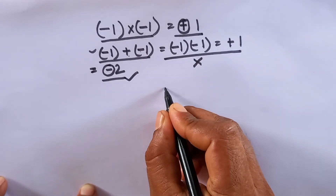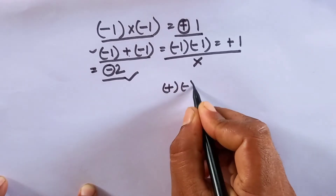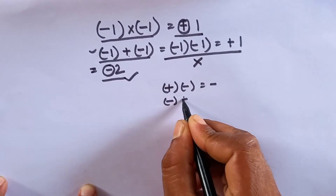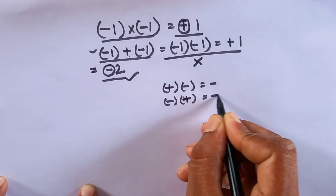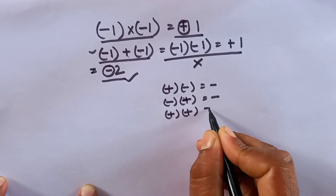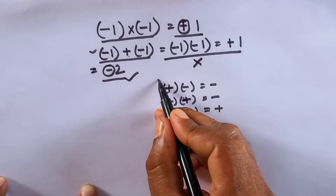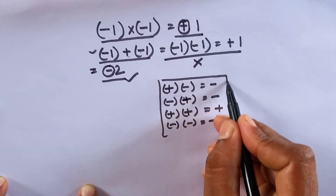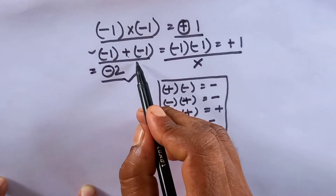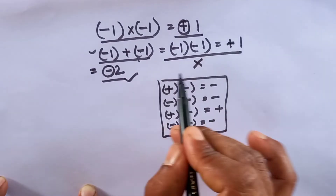You know the sign rules: plus and plus is plus, minus and minus is plus. Minus into plus is minus. Plus into plus is plus, minus into minus is plus. You know this. If this rule is used here, then this is right — but only in multiplication.